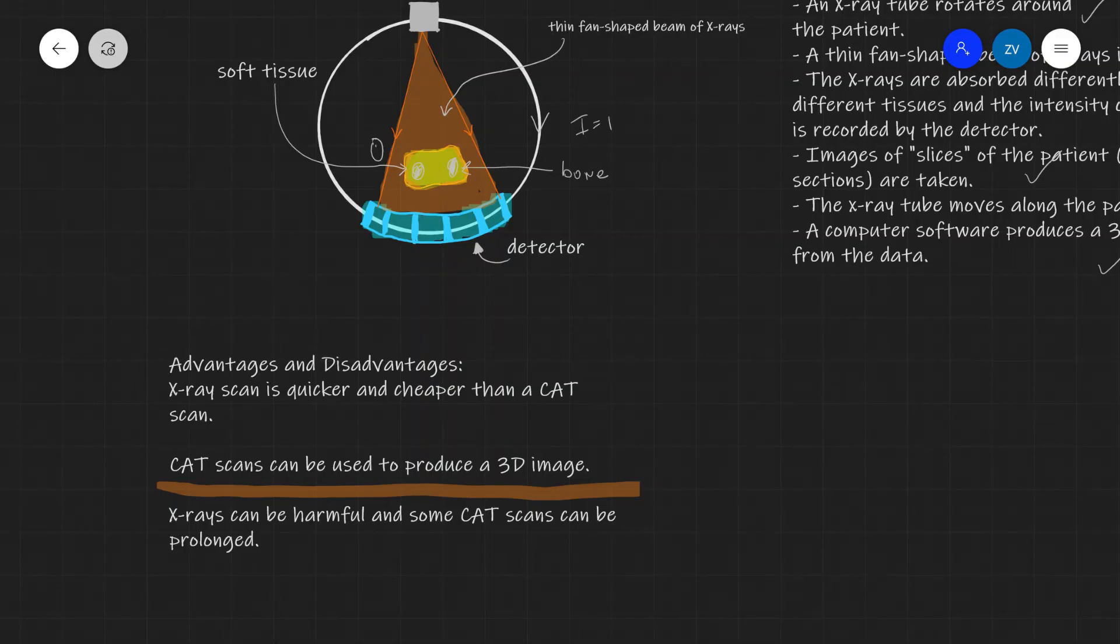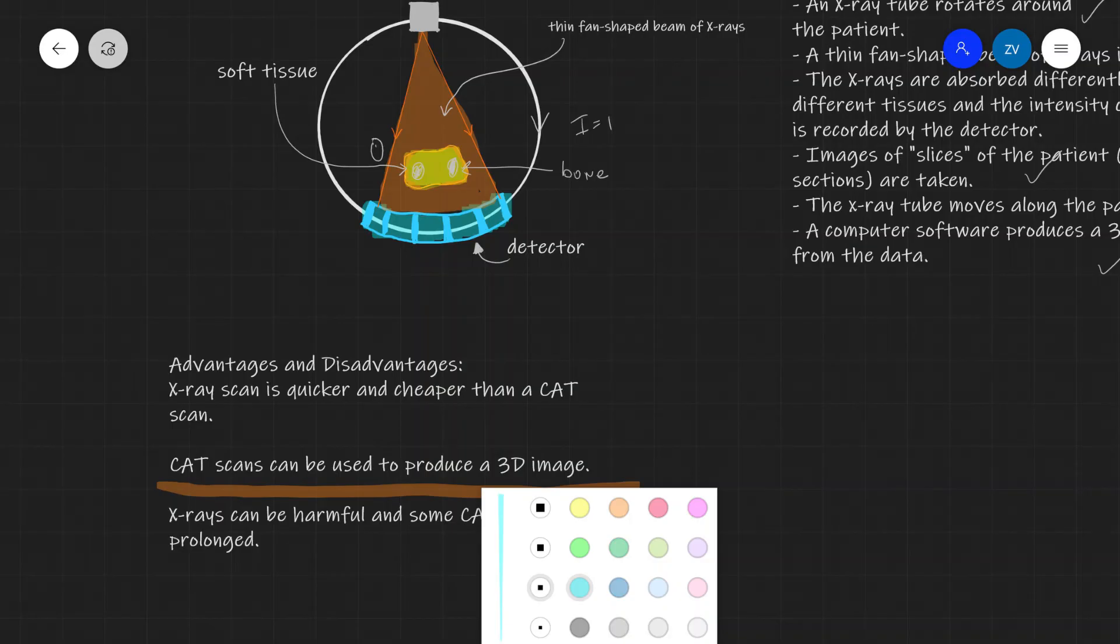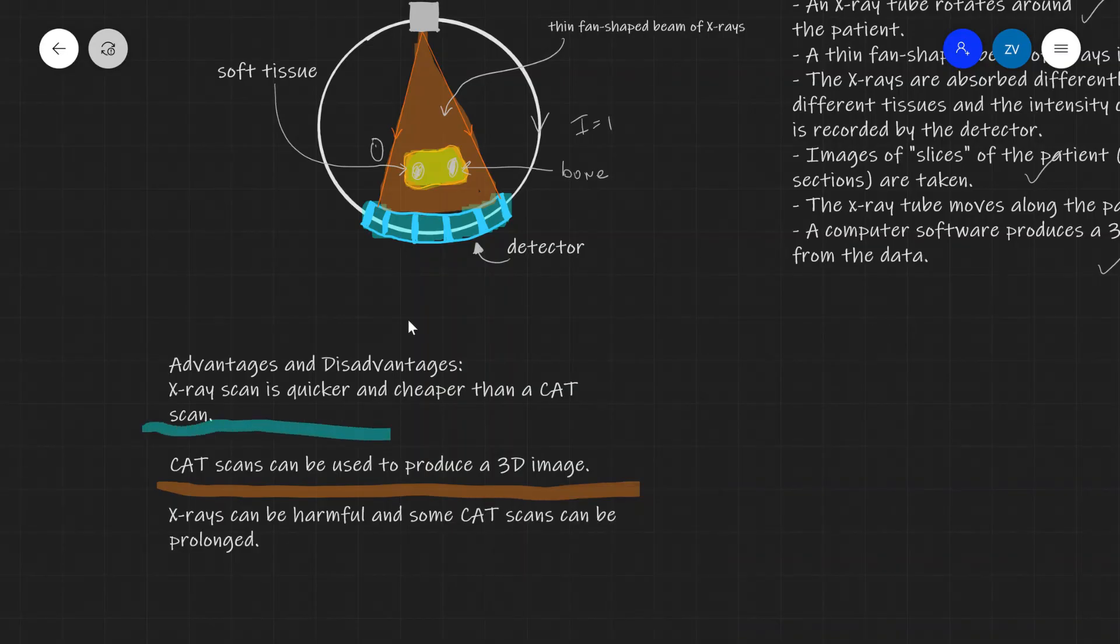However on the other hand an x-ray scan is quicker and it's considerably cheaper compared to a CAT scan. As well x-rays can be harmful and some CAT scans can be very much prolonged. The patient will also have to sit still incredibly still for a lot longer if a CAT scan is being taken.